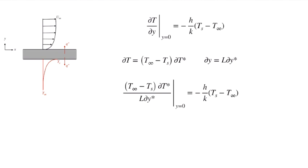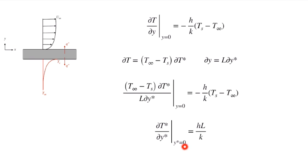Rearranging by multiplying through by L, we notice that (T infinity minus Ts) and (Ts minus T infinity) cancel out, including the negative sign. The non-dimensional temperature gradient at the wall, dT*/dy* evaluated at y* equals zero, is equal to hL over k.